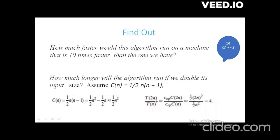I want to find T(2N) — double my input size — so replace N with 2N. On replacing, you get the value as 4 times. The multiplicative constant half cancels out. You need not worry about the value taken by your basic operation because they are cancelled out. The inference is: you can ignore your multiplicative constant and concentrate on the count's order of growth.